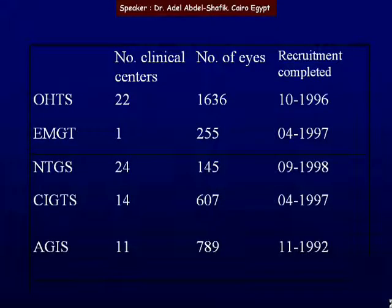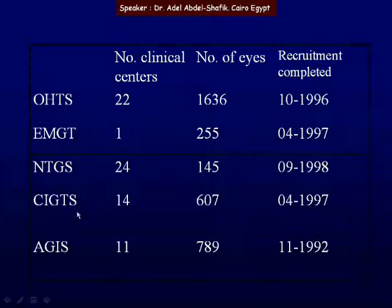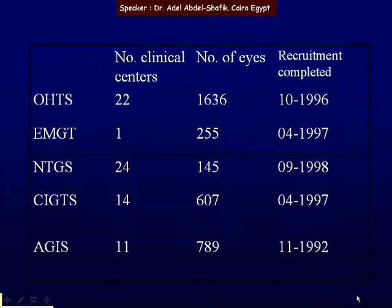This is the list of the five major clinical trials of glaucoma that I want to cover: the Ocular Hypertension Treatment Study, the Early Manifest Glaucoma Treatment, the Normal Tension Glaucoma Treatment, the Collaborative Initial Glaucoma Treatment Study, and the Advanced Glaucoma Intervention Study. As you can see here, the number of centers sharing in each, the number of eyes included in each of the studies, and the last column shows the time when recruitment was completed.